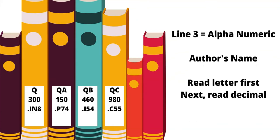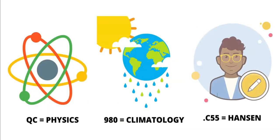Line 3 contains both letters and numbers given as a decimal and typically represents the author's name. For example, QC represents physics, 980 indicates the narrowed subtopic of climatology, and .C55 represents the author's last name, Hanson.